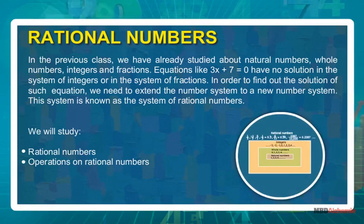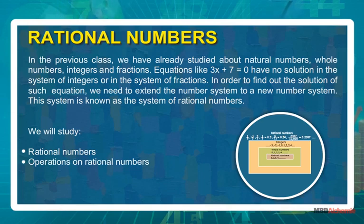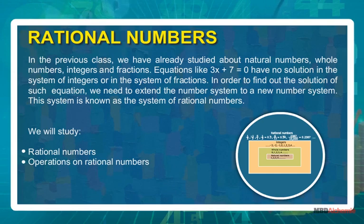In the previous class, we have already studied about natural numbers, whole numbers, integers and fractions. Equations like 3x plus 7 is equal to 0 have no solution in the system of integers or in the system of fractions. In order to find out the solution of such equations, we need to extend the number system to a new number system. This system is known as the system of rational numbers.